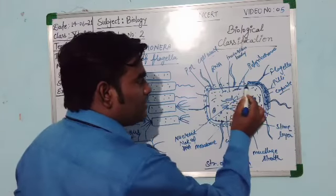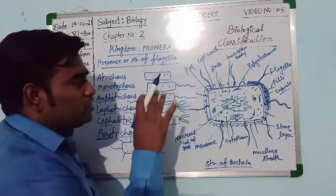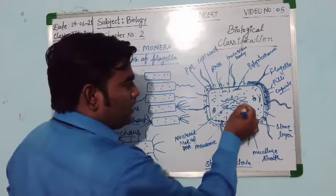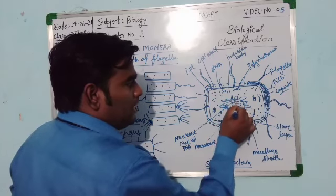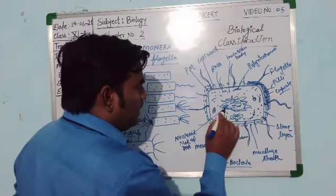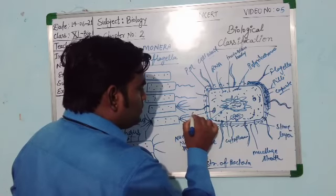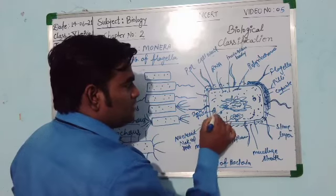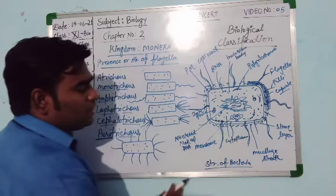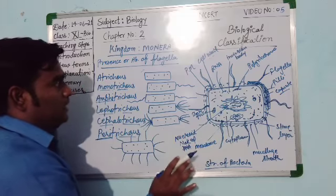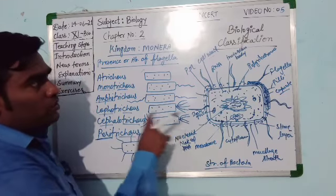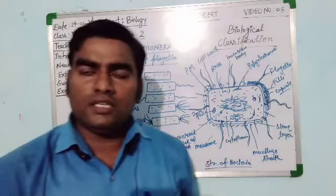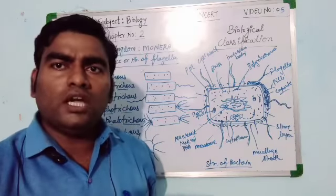The mesosome has respiratory enzymes and a respiratory function. The cell wall is very rigid in bacteria — it provides shape and strength to the bacterial cell. This is the nucleoid DNA, which is the genetic material of the cell. These are the starch granules, glycogen, and inclusion bodies. This is all about video number 5. In the next video, video number 6, we will continue with Kingdom Monera.